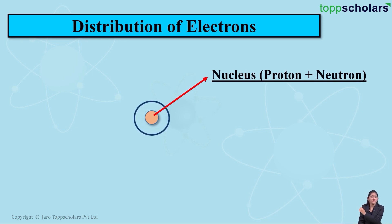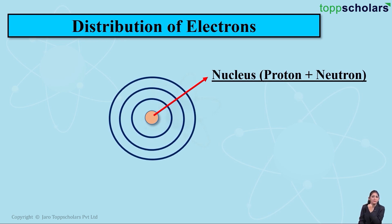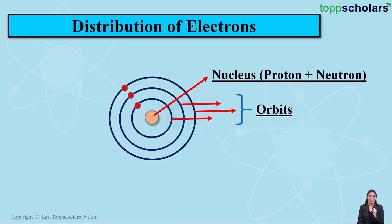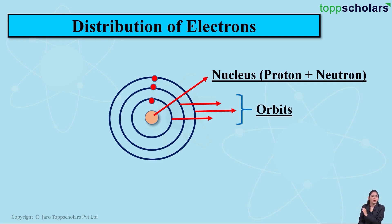Around this nucleus you have some circular rings or orbits. These circular rings present around the nucleus, in the extra nuclear part, are called orbits. Orbits are the circular rings present in the extra nuclear part, that is, around the nucleus. The electrons, which are negatively charged particles, keep revolving in these orbits. So we have the nucleus consisting of protons and neutrons, and negatively charged electrons revolving in these orbits.